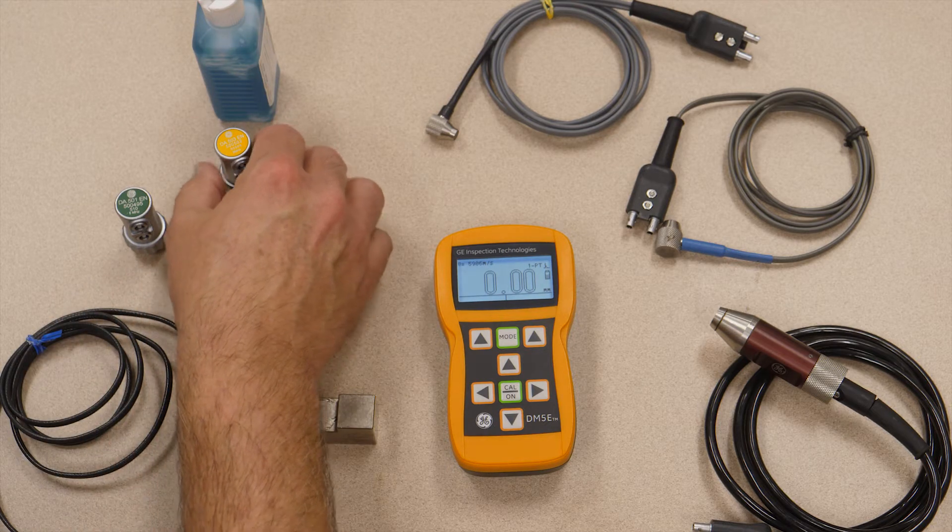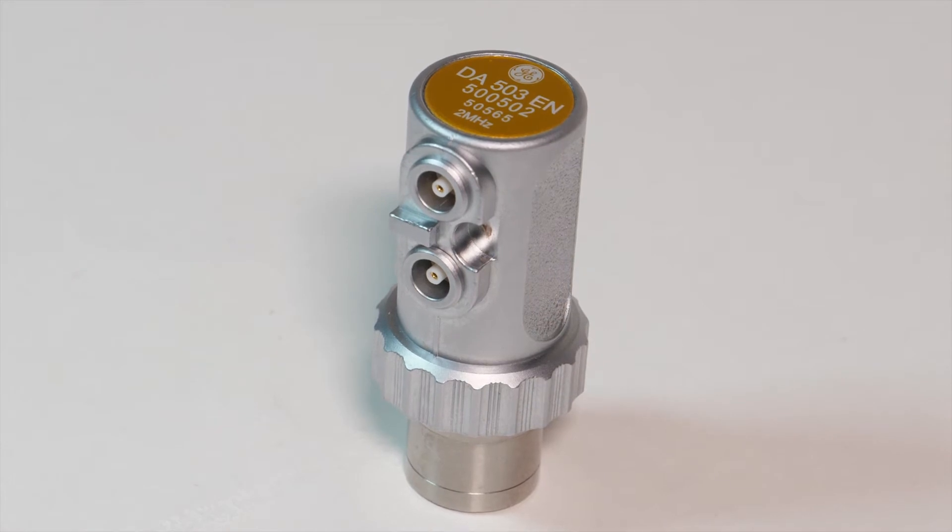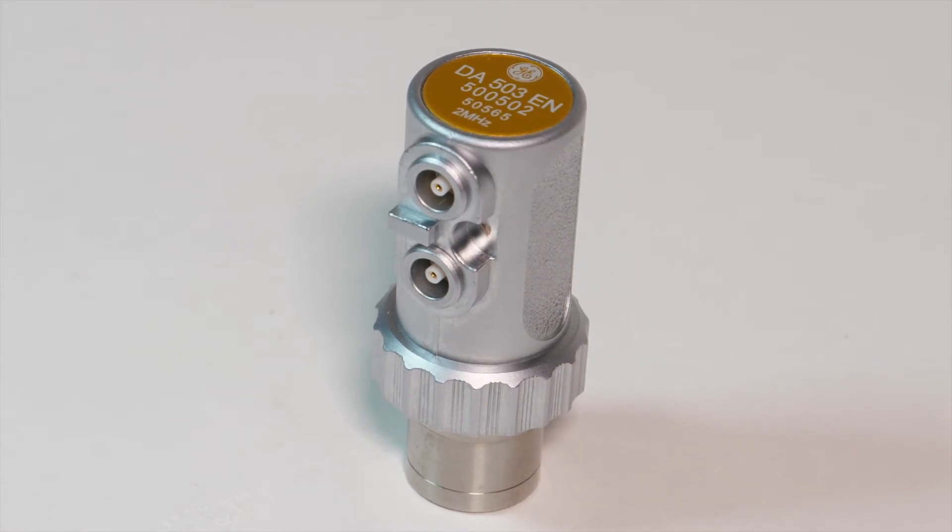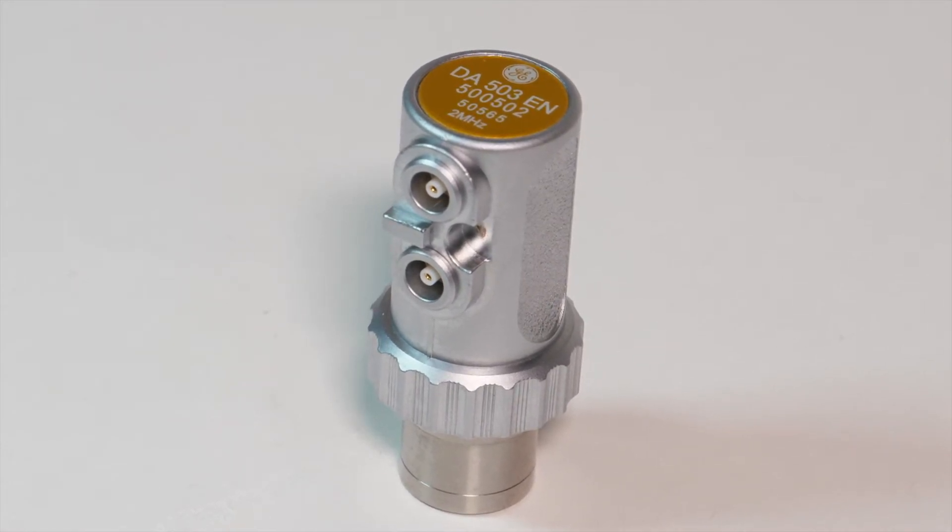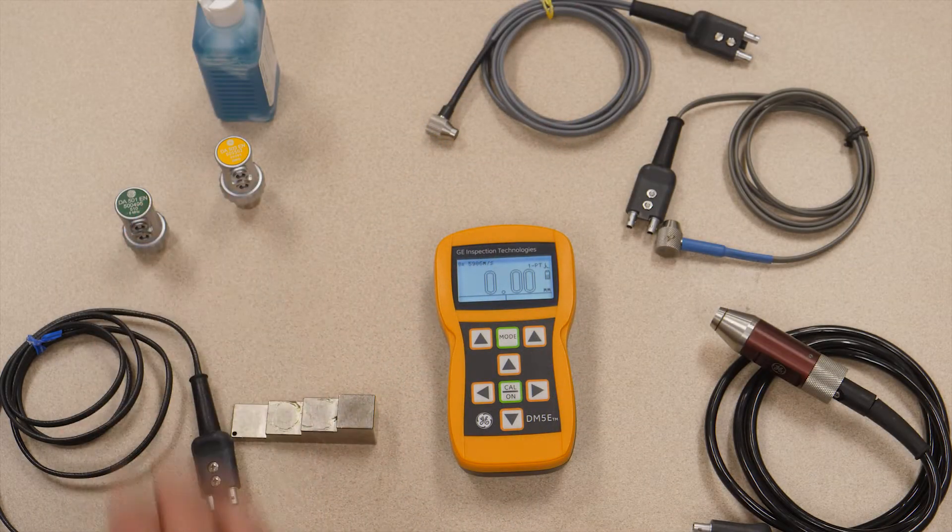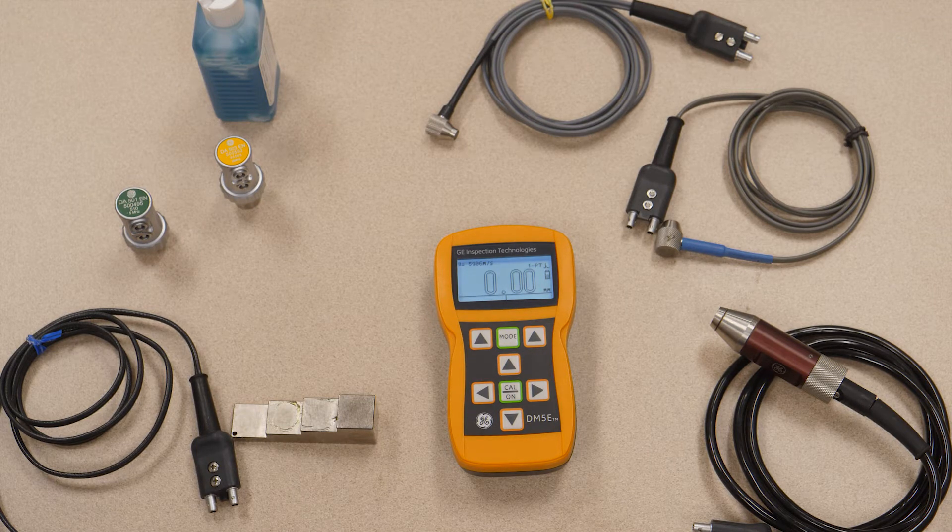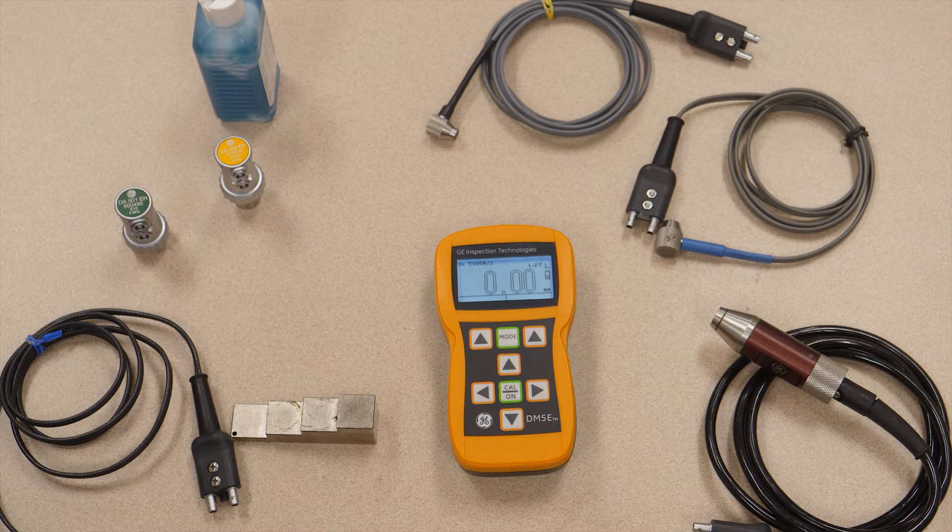The DA503 is a lower frequency, larger diameter probe. It is ideally suited to coarse grained materials, highly attenuative materials, and thicker materials. With the DA503 you have a measurement range of five millimeters to three hundred millimeters, or about two hundred thousandths to twelve inches.